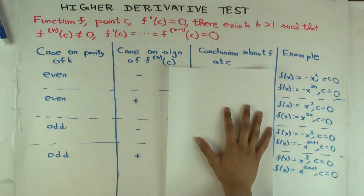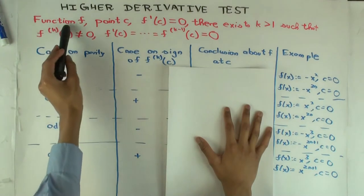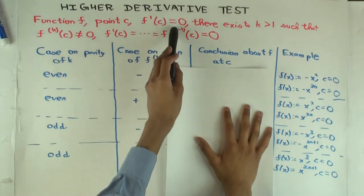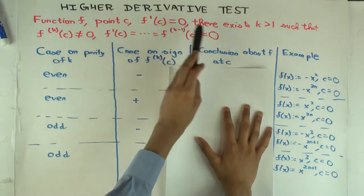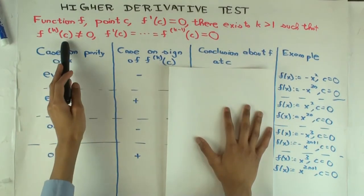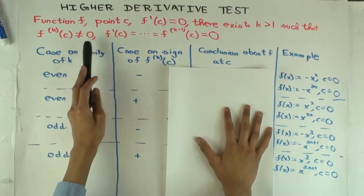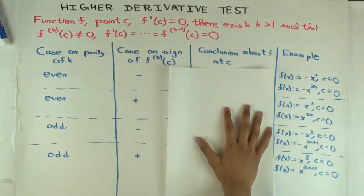And you can basically keep differentiating until you get a non-zero value derivative. So here's how it goes. You have a function, you have a point in the domain, the first derivative is zero. And there's some k greater than one, such that the kth derivative is non-zero, but all the previous derivatives are zero.